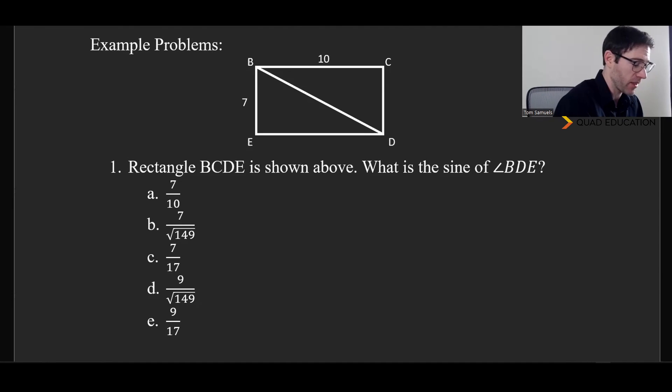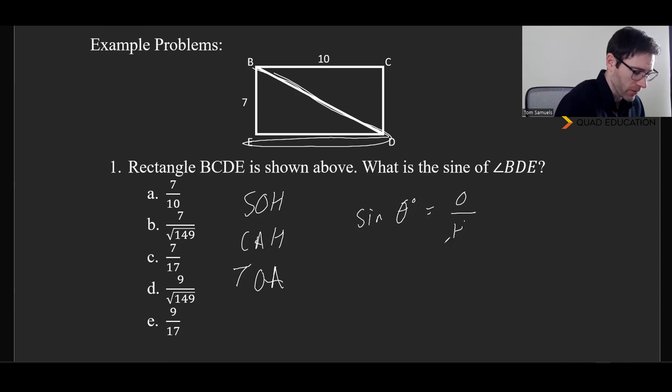It says rectangle BCDE is shown above. What is the sine of angle BDE? So that's going to be this right here. So we write down SOH-CAH-TOA every time because it's how we remember and don't get the identities confused. SOH-CAH-TOA.